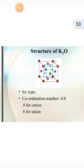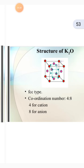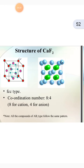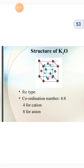Next is the structure of K₂O — it is a BCC type. The coordination number is 4 to 8 — 4 for the cation and 8 for the anion. When we show the ratio form, first we always show the cation coordination number, then the anion coordination number.